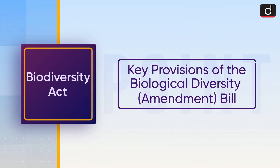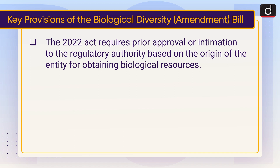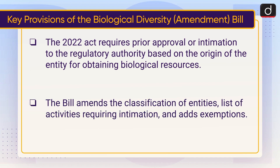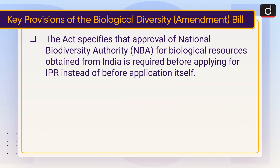Now moving on to key provisions of the Biological Diversity Amendment Bill. The 2022 Act requires prior approval or intimation to the regulatory authority based on the origin of the entity for obtaining biological resources. The bill amends the classification of entities and the list of activities requiring intimation, and adds exemptions. The Act specifies that approval of the National Biodiversity Authority for biological resources obtained from India is required before applying for IPR, instead of before the application itself.